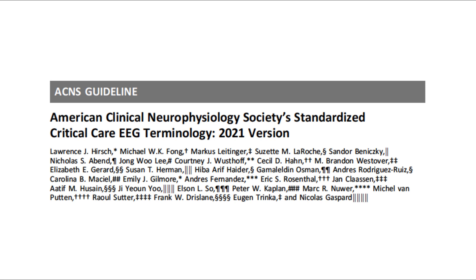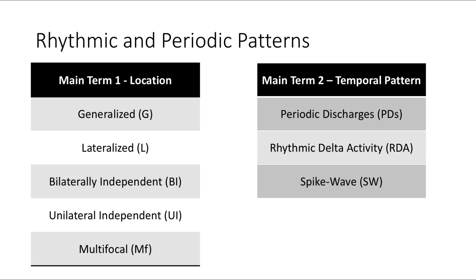Many of the images that you'll see in this video are based on this publication, which is an impactful publication and includes additional information besides that included in this presentation. When describing rhythmic and periodic patterns, there are two main terms. EEGers should always go back to these two main terms and understand them very well before describing additional features of rhythmic or periodic patterns. The two terms relate to two different aspects of rhythmic and periodic patterns.